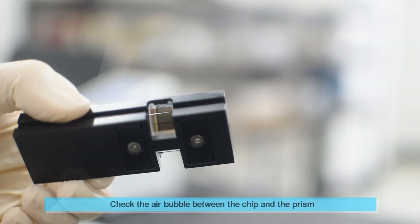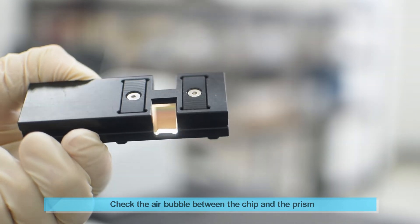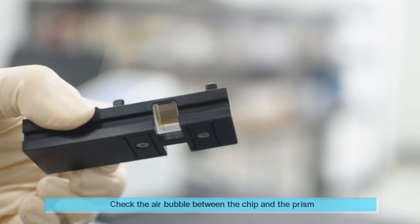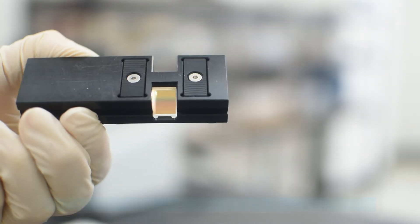Check for air bubbles trapped between the chip and the prism by looking from the bottom side. If air bubbles are captured, remove them by sliding the chip gently left to right using the tweezer.